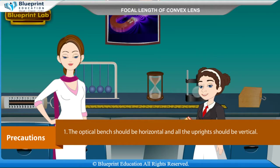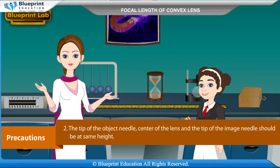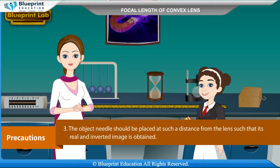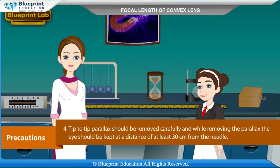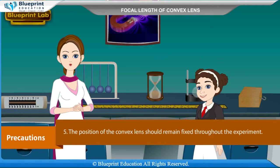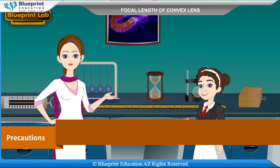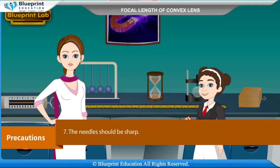Precautions: The optical bench should be horizontal and all uprights should be vertical. The tip of the object needle, the center of the lens, and the tip of the image needle should be at the same height. The object needle must be placed far enough from the lens to obtain a real and inverted image. Tip-to-tip parallax should be removed carefully with the eye at least 30 cm from the needle. The convex lens position should remain fixed throughout, and index correction should be applied properly.